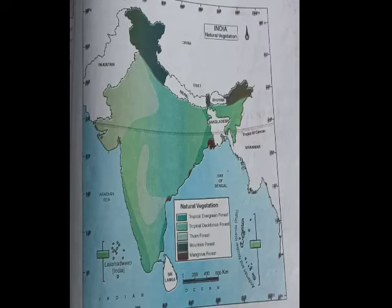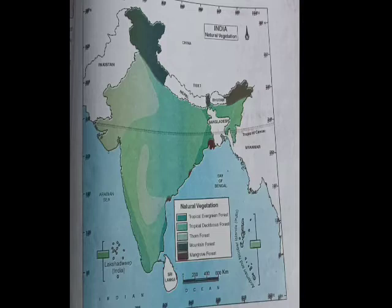A map of India's natural vegetation is given to us. Students, look at the map — different colors are there, and they indicate different types of forests. Which color indicates which type of forest is given near the map in a small square bracket, indicated with a red arrow. Please look into that.